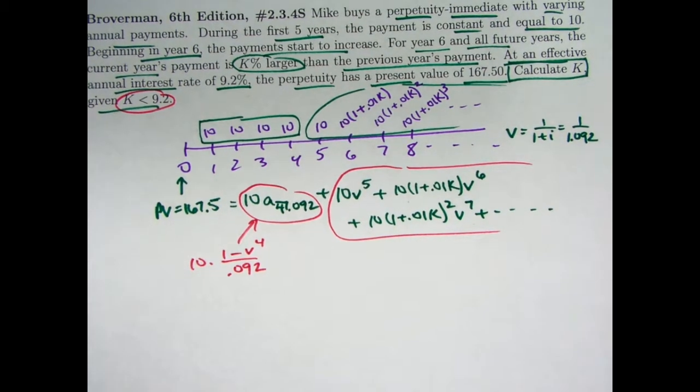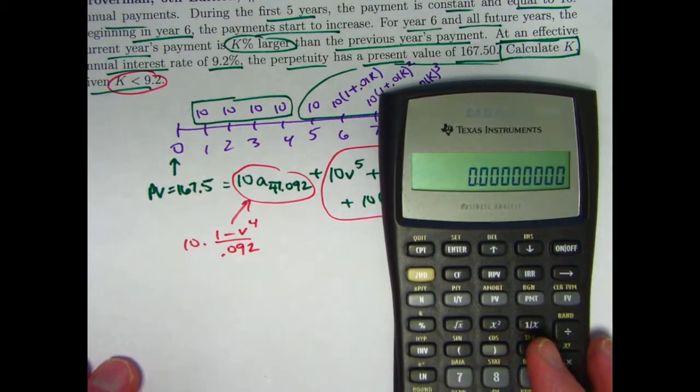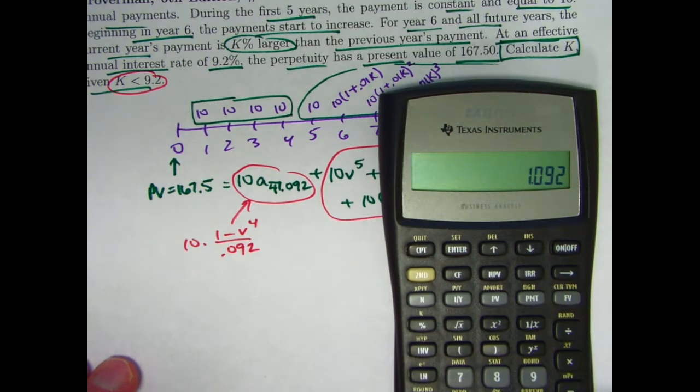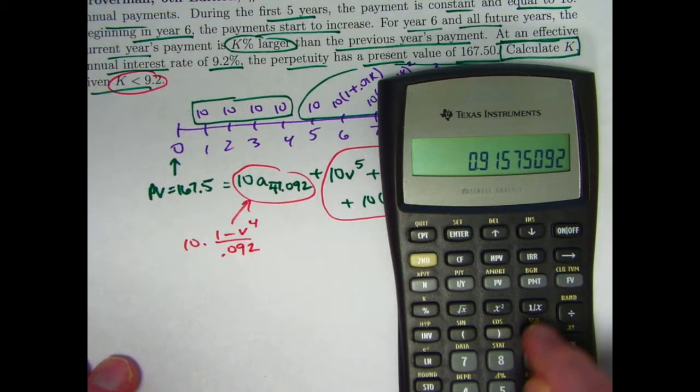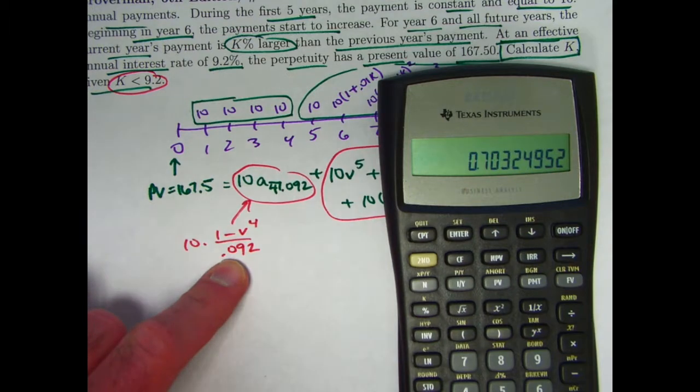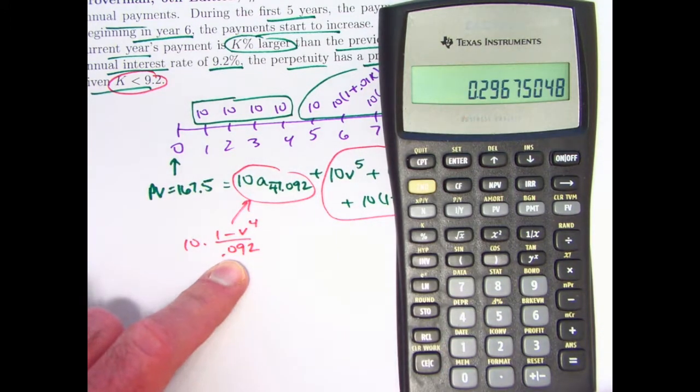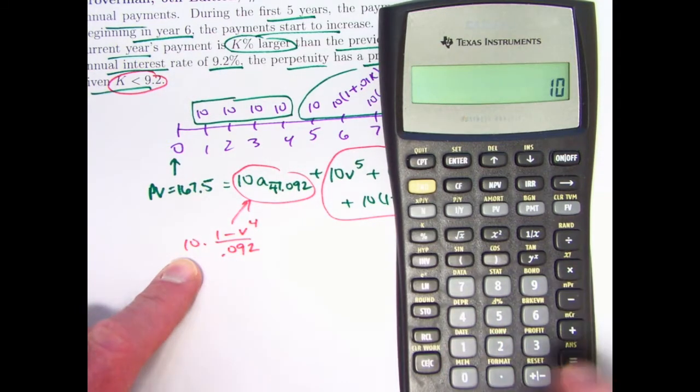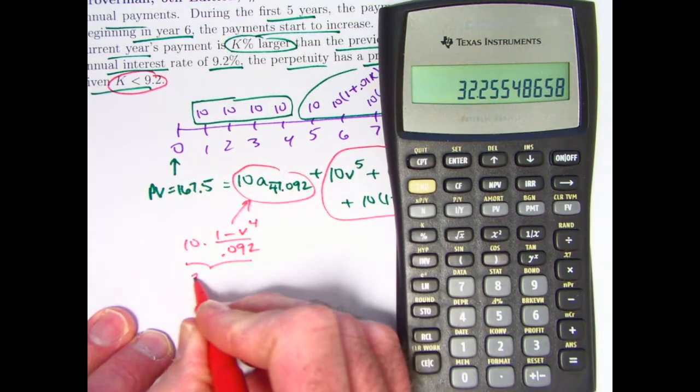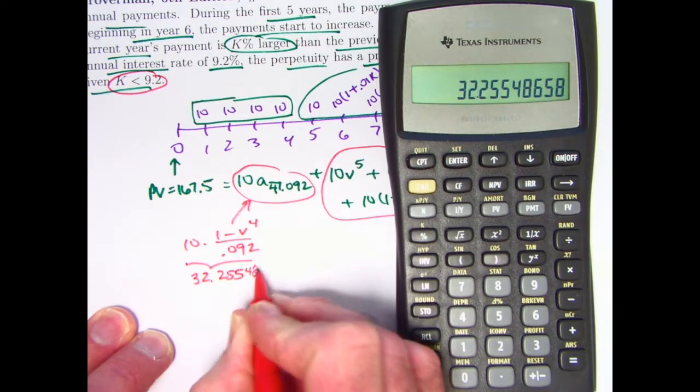Alright, let's go ahead and figure out what this quantity is with our calculator. So let's see. 1.092 is one plus i. Take its reciprocal, that will be v. Let's go ahead and store the value of v first of all in register zero. It's stored now. I need to raise that to the fourth power. Subtract that from one, so I'll press my minus sign here, and then plus one. Divide by 0.092. Then multiply by ten. This expression right here equals, I'll go ahead and include all the decimals because I'm paranoid about that. 32.25548658.